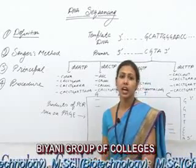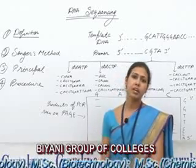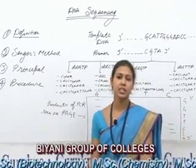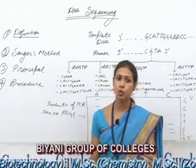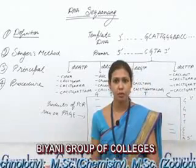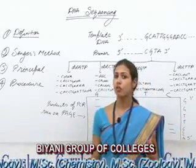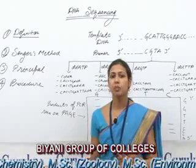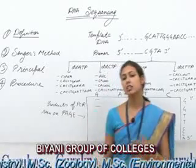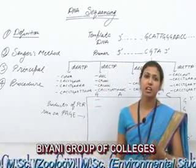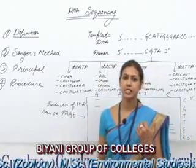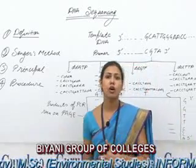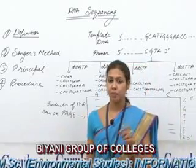The principle of the technique is: normally, DNA replication involves three basic components — the 2'-deoxyribose sugar, phosphate group, and bases, that is ATGC. But Sanger's method uses a different sugar, that is the 2',3'-dideoxyribose sugar.